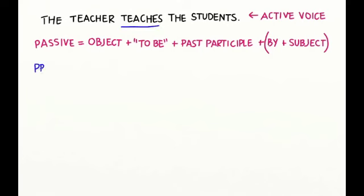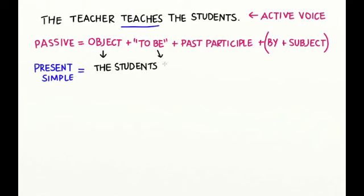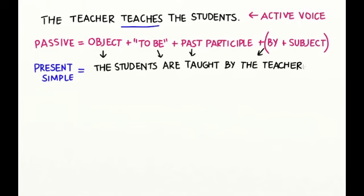Let's change the sentence to passive voice. This sentence is in the present tense. The object comes first — the students. Then the form of to be, which in this case is the word are. Then the past participle of teach, which is taught. Then by, and last the subject. The students are taught by the teacher.